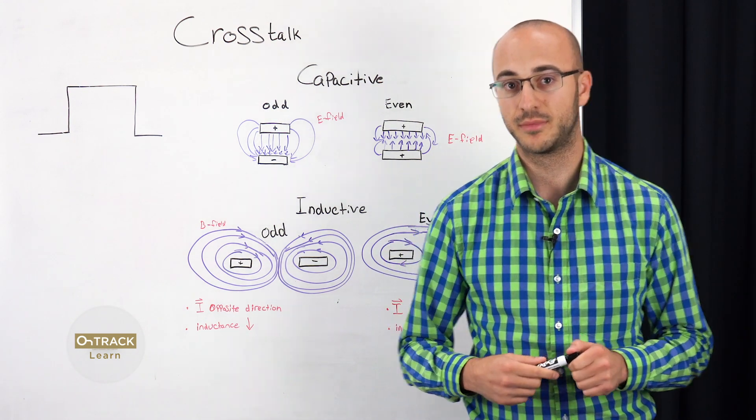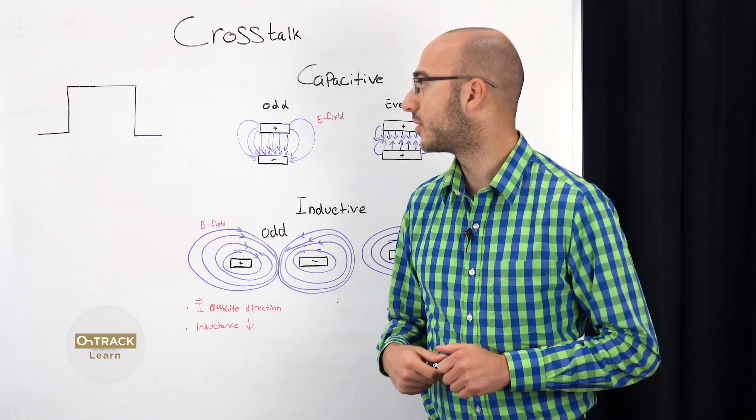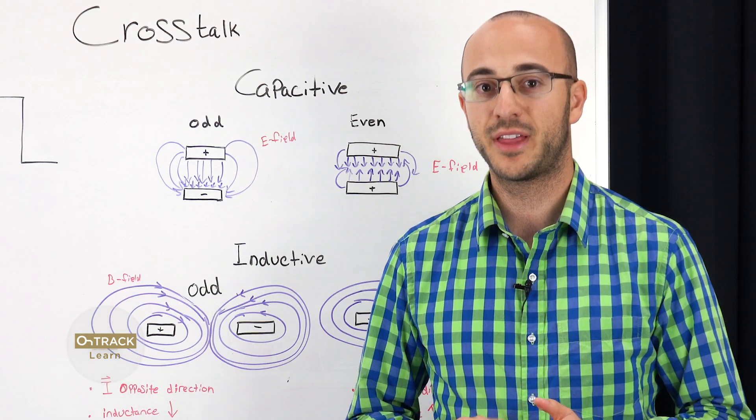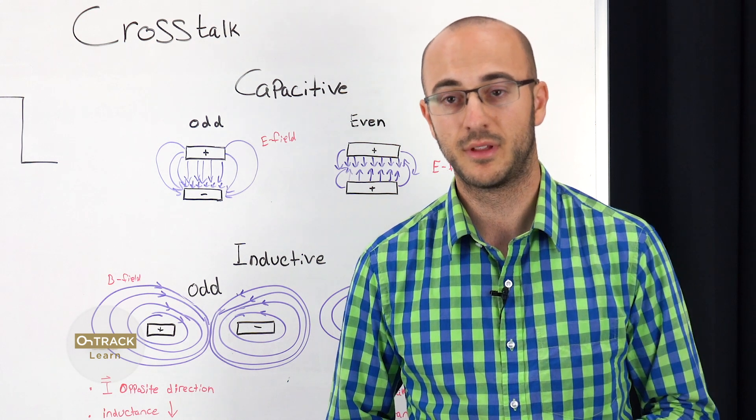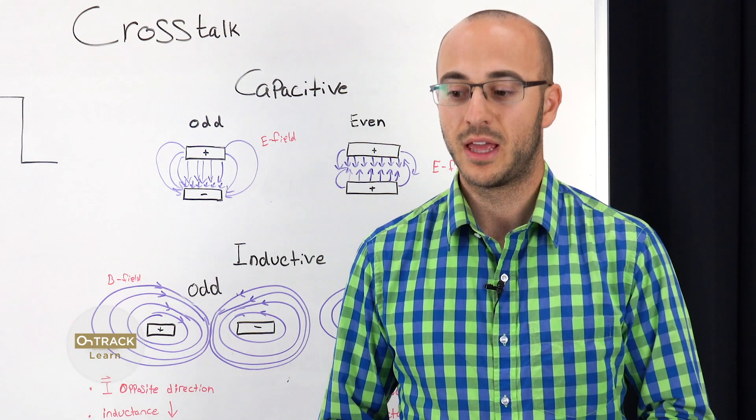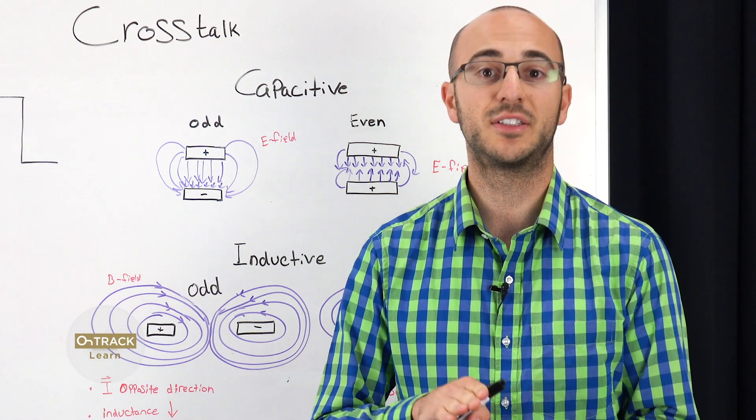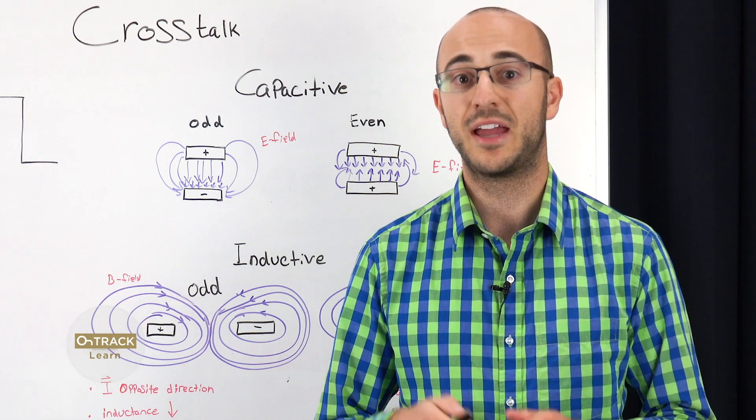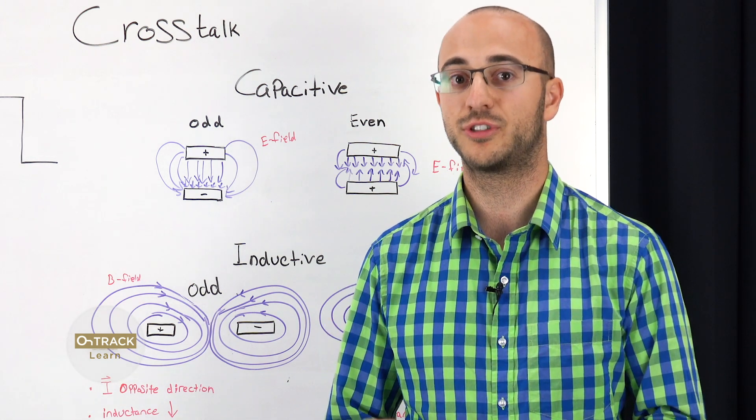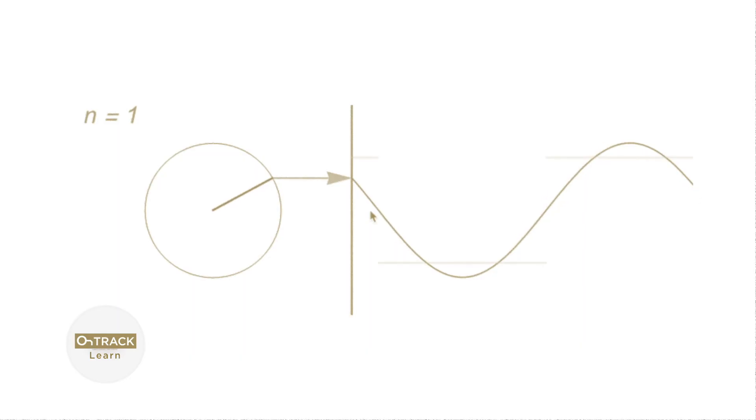It has to do with Fourier series. Take a look at this square function here. In order to recreate that, we have to use Fourier series. And what Fourier series are is the superposition of sines and cosines of different weights and frequencies in order to recreate a periodic function.